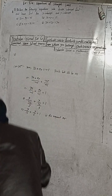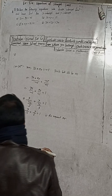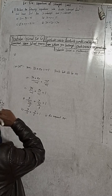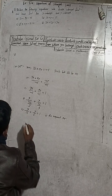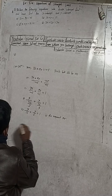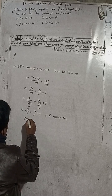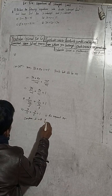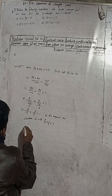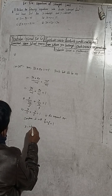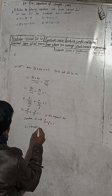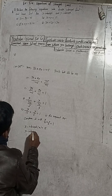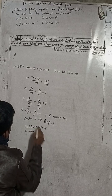This is the required equation in double intercept form. Now we have to find the x-intercept and y-intercept. Comparing with the standard form x/a + y/b = 1, we get the x-intercept, that is a, is equal to 15, and the y-intercept b is equal to 5.